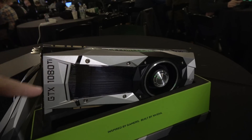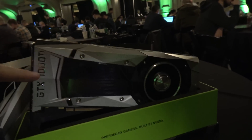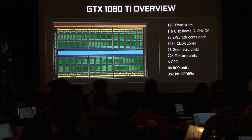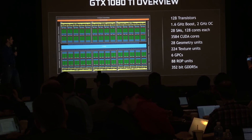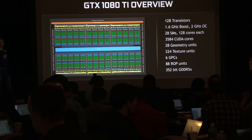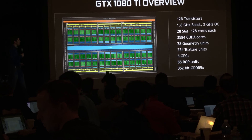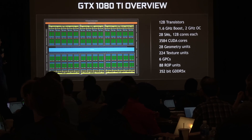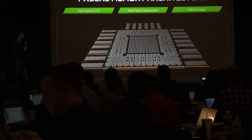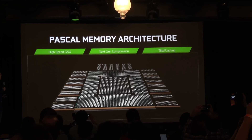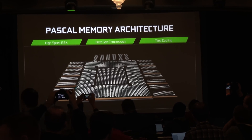Let's talk about the specs. Everyone wants to know the clocks and CUDA cores. The big thing is the new G5X memory that Micron has honed so it now runs at 11 gigabits per second — pretty freaking ridiculous. It's a 352-bit card with 224 texture units, 28 geometry units, and a total of 3,584 CUDA cores. The boost clock is 1.6 gigahertz. A lot of people were saying maybe 1.7. They said 2 gigahertz overclocked, no problem, and I think we'll be able to push it even farther than that.